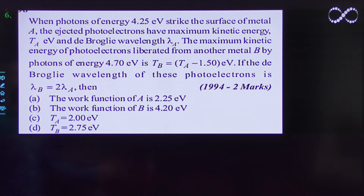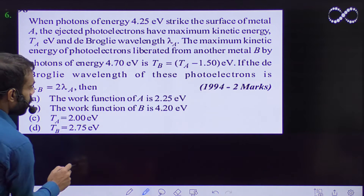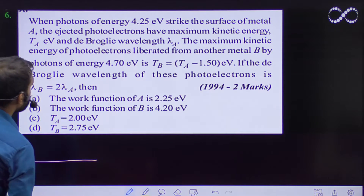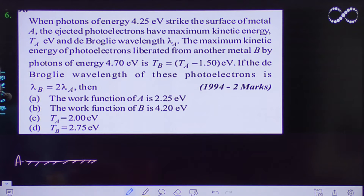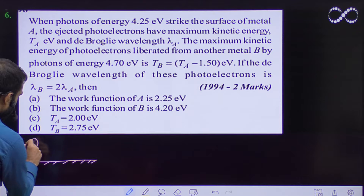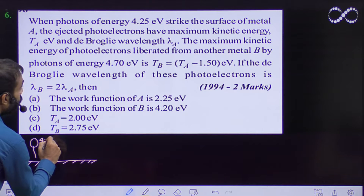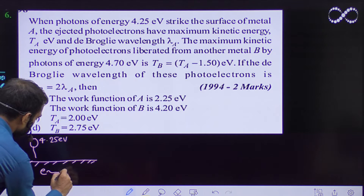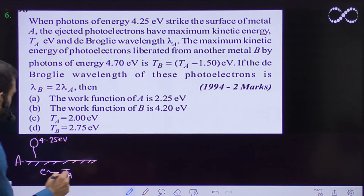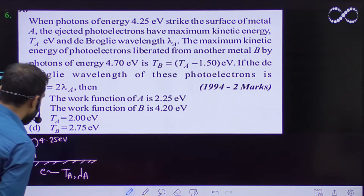Hello students, let us see this question. It is given: when photons of energy strike a surface of metal A, the ejected photoelectrons have a maximum energy T_A. So metal A is given — a photon of energy 4.25 electron volt strikes the metal A, and ejected photoelectrons have maximum kinetic energy T_A and de Broglie wavelength λ_A. This is the photon.